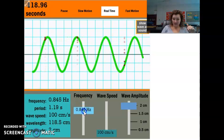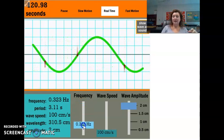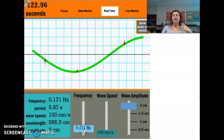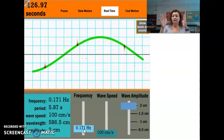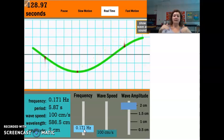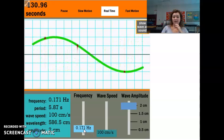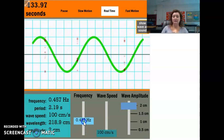So as I decrease frequency, you can see my wave stretches out, meaning that I have lower energy because now I have wavelengths that are very far apart from each other. So my wave is very low, low energy and low frequency. They go hand in hand.